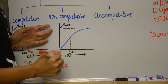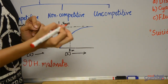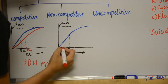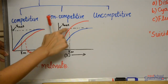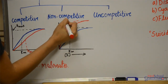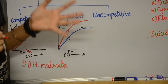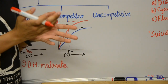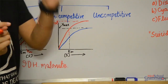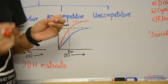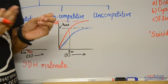In non-competitive inhibition, your Km value remains the same but Vmax decreases. Your graph looks something like this — Km value remains the same but your Vmax is decreasing. Because your active site is free, your substrate is free to bind; there is nothing inhibiting that binding of the substrate. However, once the inhibitor binds at the other site, it inhibits the catalysis of the reaction, which is why your Vmax decreases.